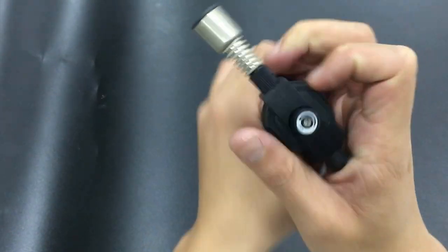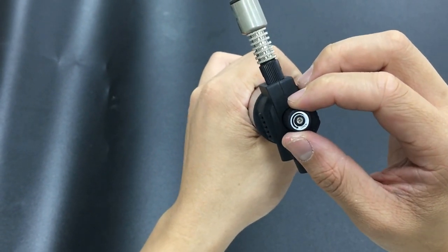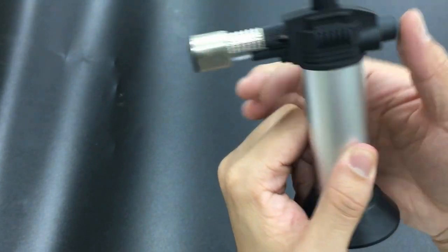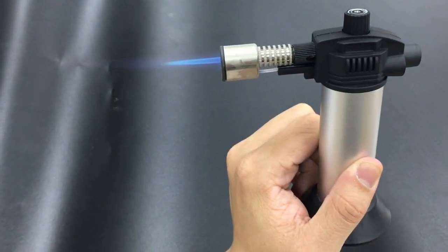Then, turn the gas valve about 90 to 180 degrees. That's fine. Press the ignition button right here. Let it go.